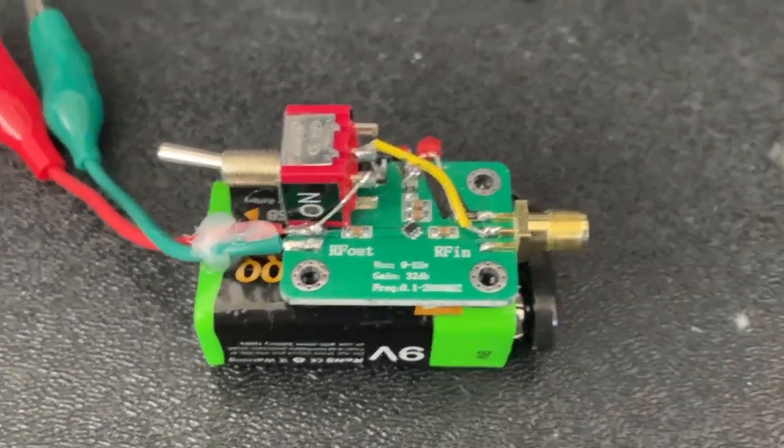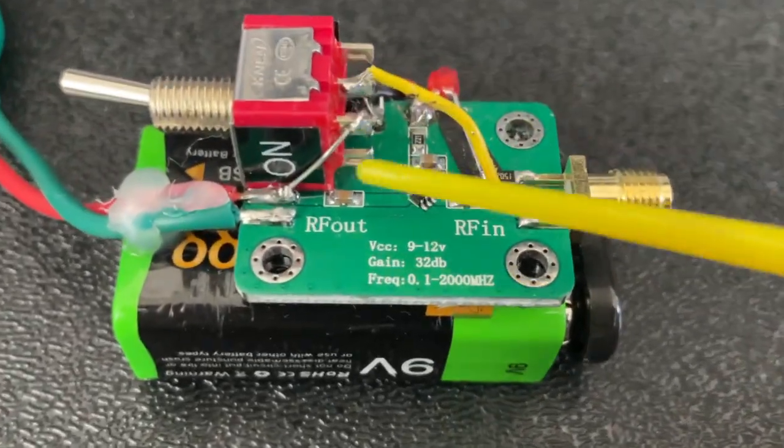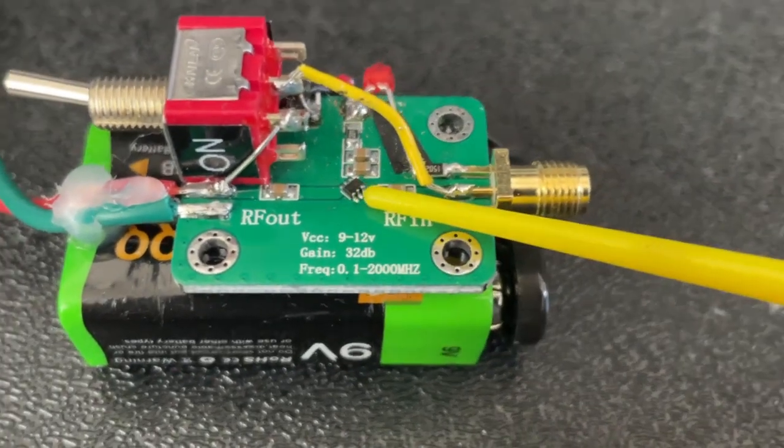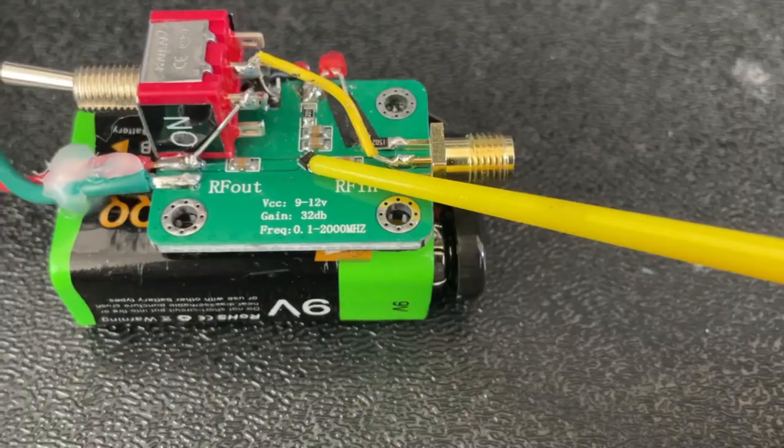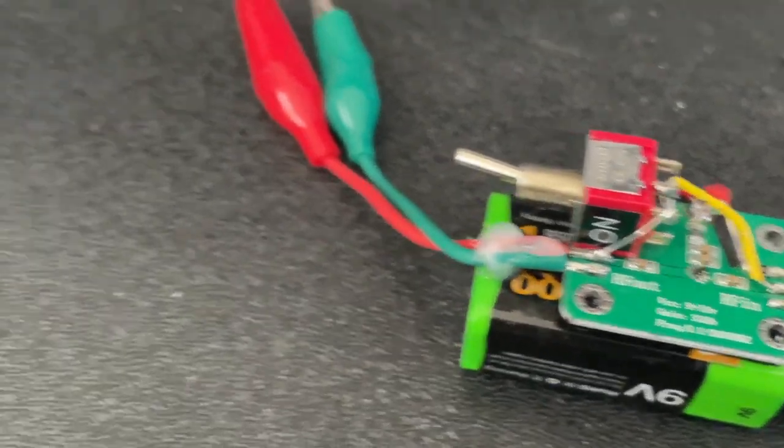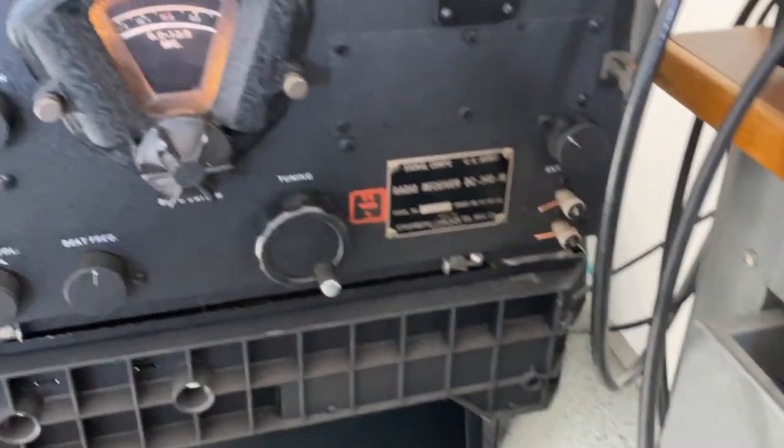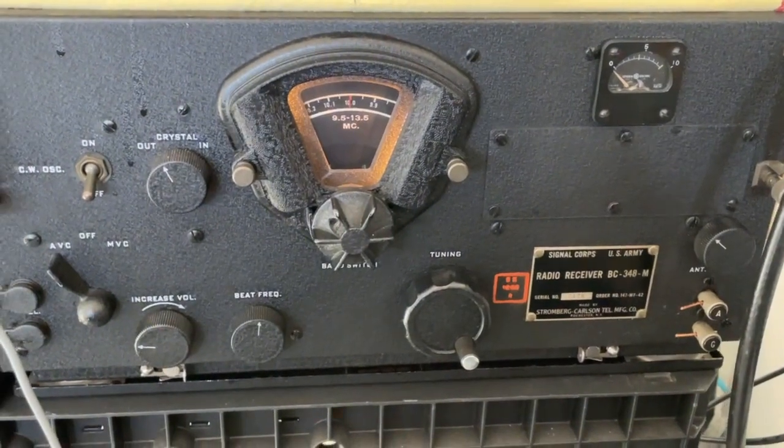Now the chip that is used in this wideband amplifier down here is a BGA2869. For some time I've been using my tube radio here, my old BC348.